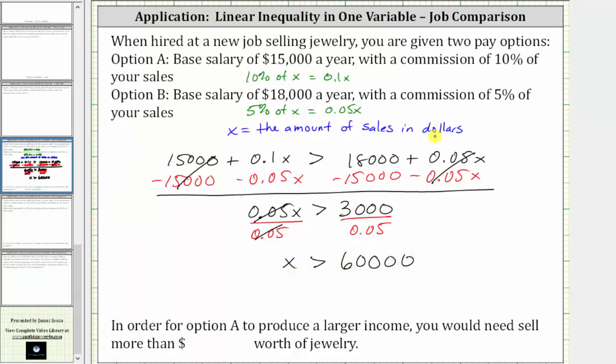Which means when the amount of sales is over $60,000, option A will produce a larger income. So to complete the sentence, in order for option A to produce a larger income, you need to sell more than $60,000 worth of jewelry. I hope you found this helpful.